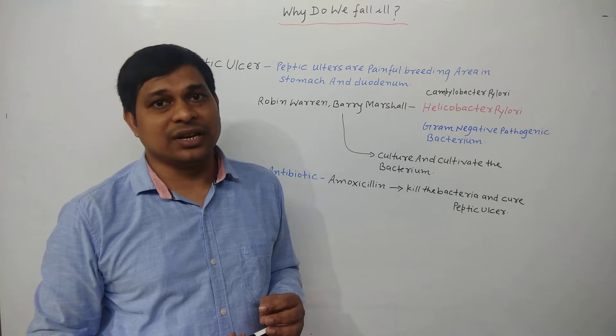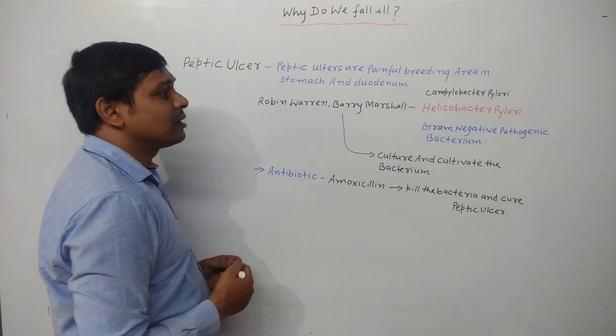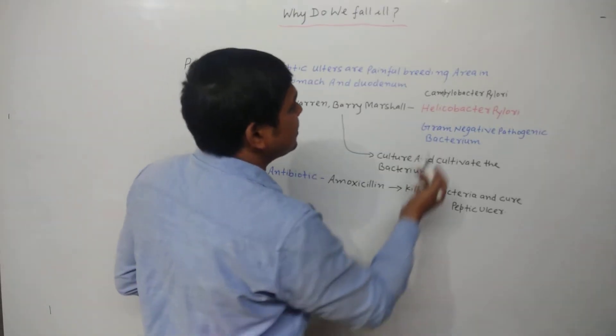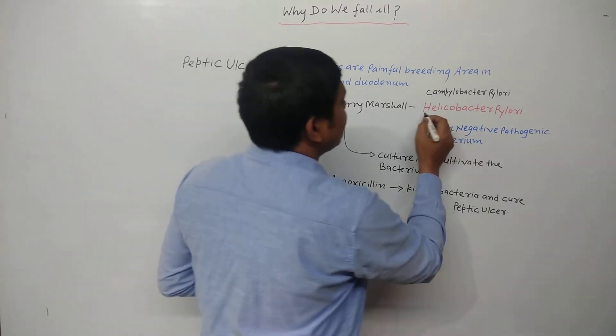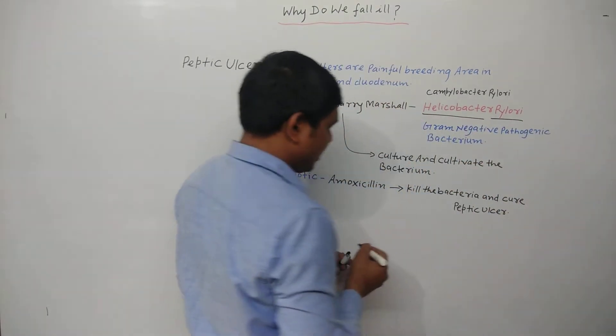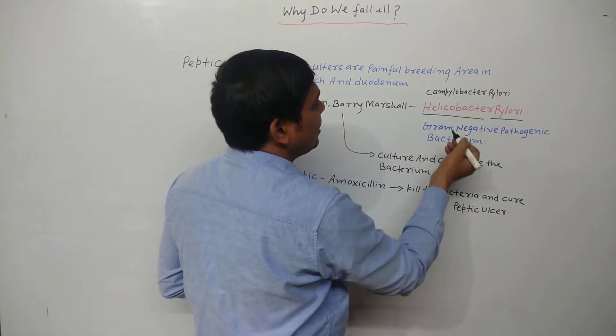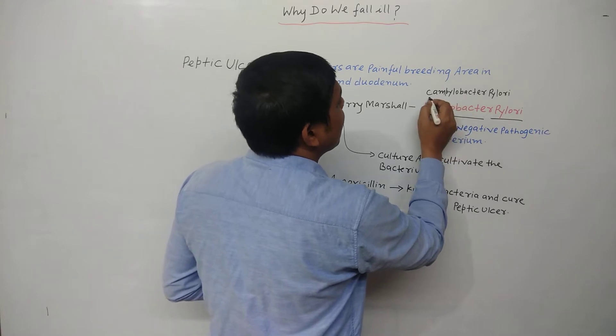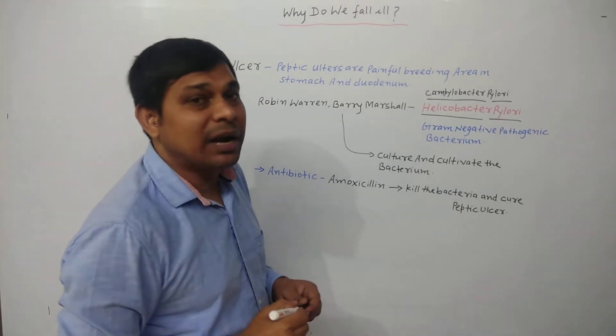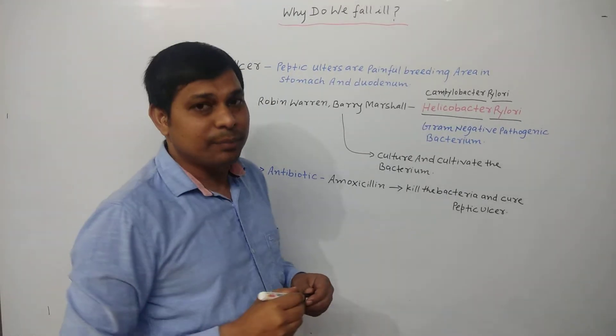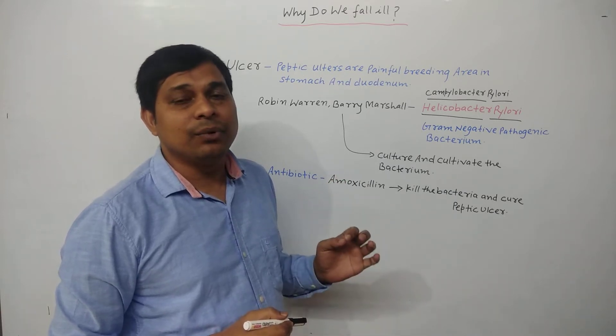But that wasn't correct. Peptic ulcer is caused by bacterium Helicobacter pylori. That is the present time name, and the old name was Campylobacter pylori.